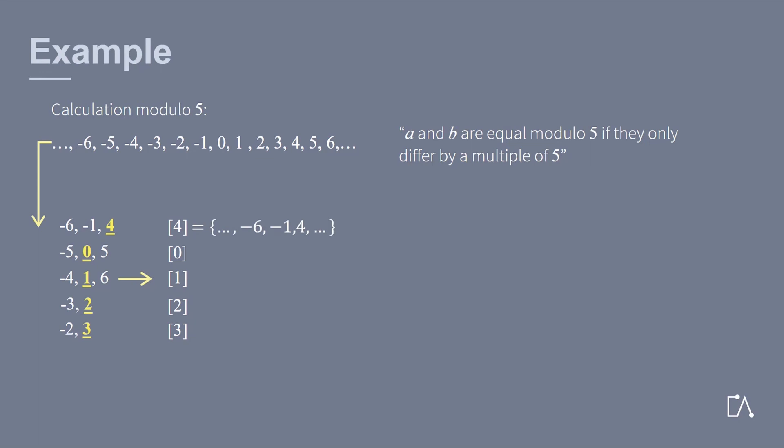The residue class 4 also contains minus 6, minus 1 and 4. If we would choose different representatives, for instance 6 instead of 1, the residue classes are the same, since their representatives are the same modulo 5. In total, Z/5Z consists of the residue classes from 0 to 4.